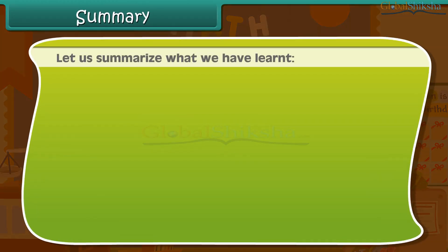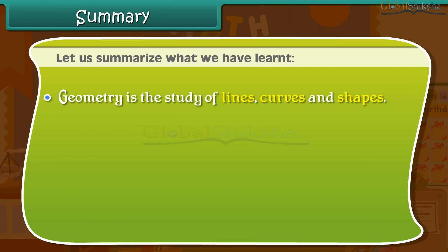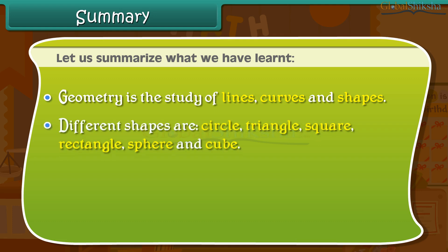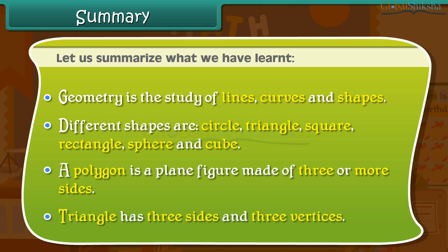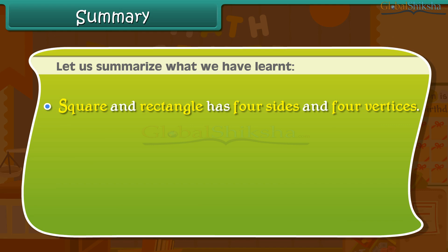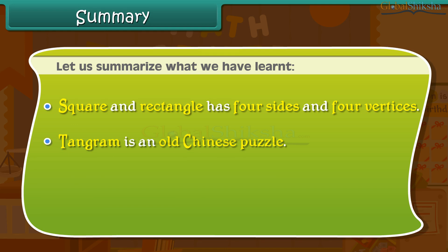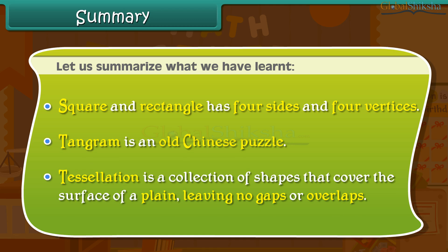In summary: geometry is the study of lines, curves, and shapes. Different shapes include circle, triangle, square, rectangle, sphere, and cube. A polygon is a plane figure made of three or more sides. A triangle has three sides and three vertices; square and rectangle each have four sides and four vertices. Tangram is an old Chinese puzzle, and tessellation is a collection of shapes covering a plane with no gaps or overlaps.